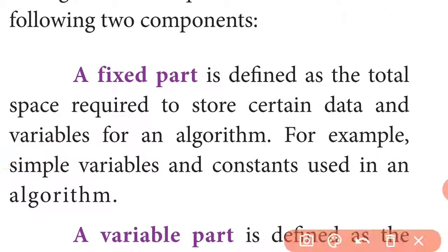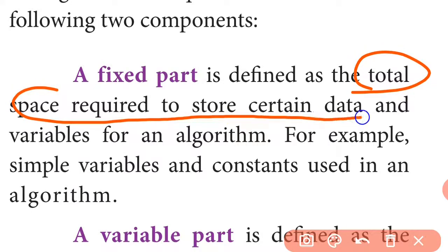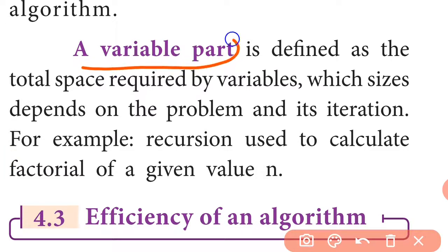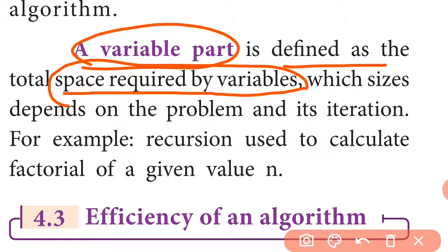The fixed part is defined as the total space required to store certain data and variables for an algorithm — for example, simple variables and constants used in an algorithm. The variable part is defined as the total space required by variables whose size depends on the problem and its iteration.